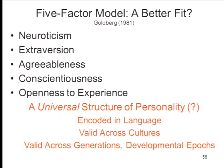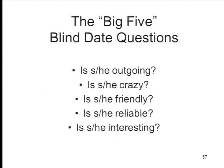Rosenberg's distinction between intellectual and social good-bad is a good way to think about what makes a trait central, but an even better way is that central traits likely lie close to any one of these five factors — the fundamental dimensions of impression formation, the things you want to know about another person. So much so that I call them the five blind date questions: Is he outgoing? — extraversion. Is he crazy? — neuroticism. Is he friendly? — agreeableness. Is he reliable? — conscientiousness. And is he interesting? — openness to experience. There isn't much else you really need to know.